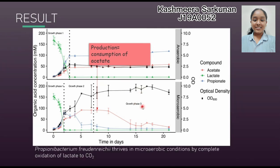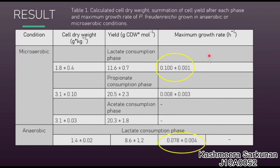The acetate switch occurs as cells deplete their environment of acetate-producing carbon sources and begin to rely on their energy reserves. The maximum growth rate during the lactate consumption phase in micro-aerobic conditions shows a higher yield compared to other phases, including the anaerobic condition, while anaerobic conditions show an average yield during the lactate consumption phase.